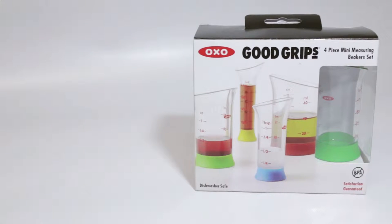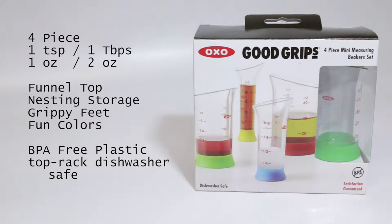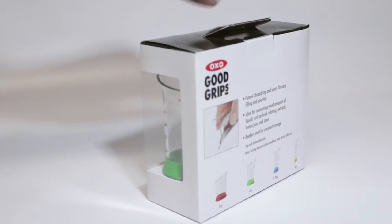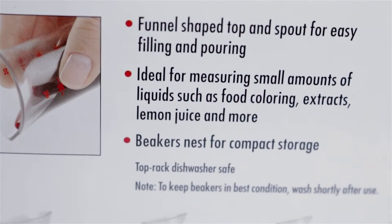Hi everybody, so today we're going to take a look at the OXO Good Grips 4-piece Mini Measuring Beaker Set. This is a plastic measuring set for measuring liquids.